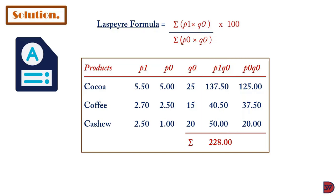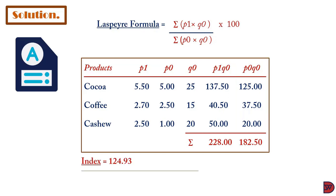The base price times base quantity for cashew gives $20.00. The summation of selected price times base quantity gives $228.00, while the summation of base price times base quantity gives $182.50. The Laspeyres index is therefore 228 ÷ 182.50 × 100 = 124.93, meaning there was an increase of 24.93% comparing 2008 to 2009 for these three products combined.